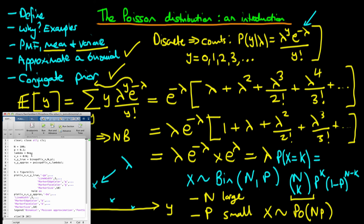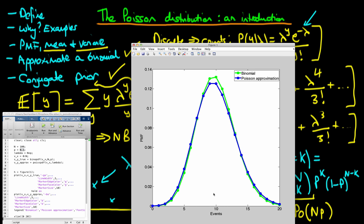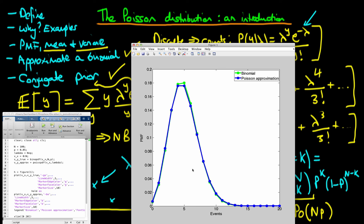I've coded up a MATLAB script for the case where the total number of trials is 100 and the probability of success in any given trial is 0.1. I calculate the exact binomial probabilities and then approximate using a Poisson distribution with lambda equal to n times p. Running this, we can see that for n equals 100 and p equals 0.1, the Poisson approximation is pretty good. The approximation becomes even better if we decrease p — halving p to 0.05 brings the Poisson approximation even closer to the exact binomial.